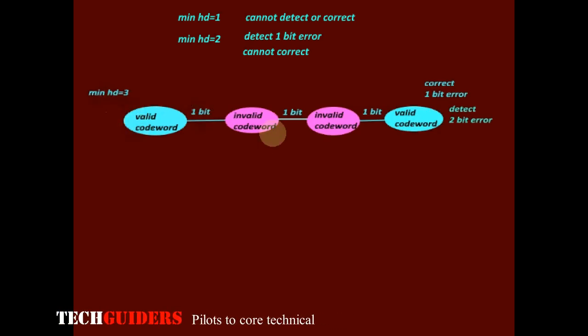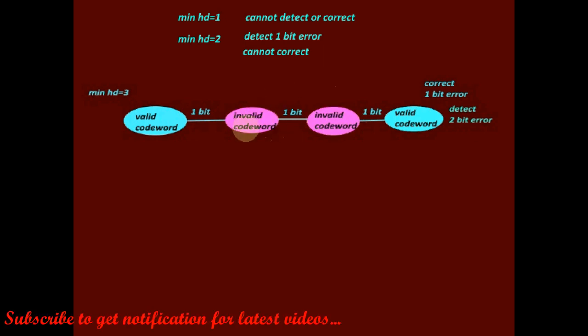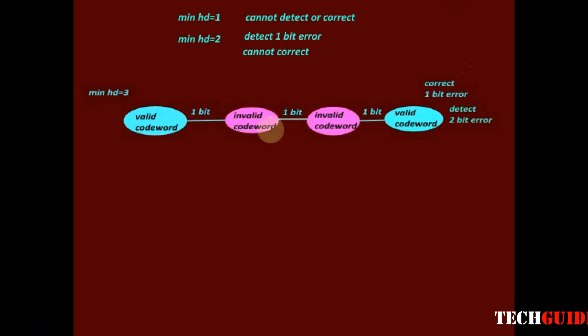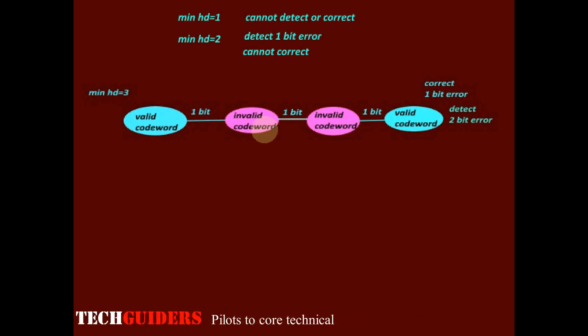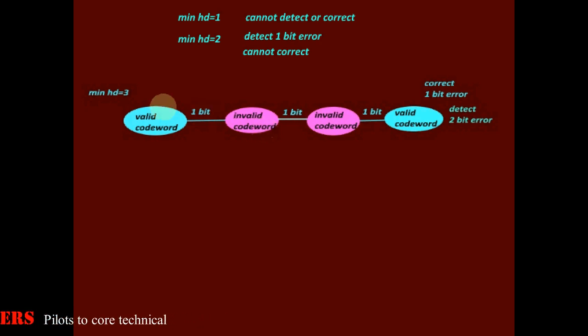If minimum Hamming distance is 1, we cannot even detect a 1-bit error, so there is no chance to correct. If minimum Hamming distance is 2, we can detect a 1-bit error but cannot correct any bit error. If minimum Hamming distance is 3, we can detect up to 2-bit errors and correct 1-bit errors. From 2-bit errors onwards we cannot correct if the minimum Hamming distance is 3.